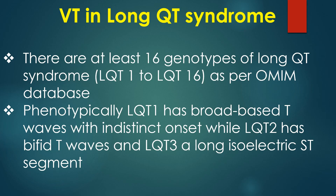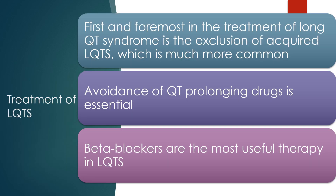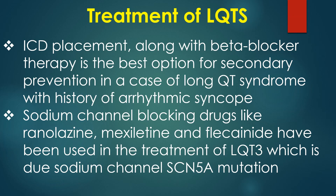There are at least 16 genotypes of long QT syndrome, LQT1 to LQT16, as per the OMIM database. Phenotypically, LQT1 has broad-based T waves with indistinct onset, while LQT2 has bifid T waves and LQT3 has a long isoelectric ST segment. First and foremost in treatment is the exclusion of acquired LQTS, which is much more common; avoidance of QT-prolonging drugs is essential. Beta blockers are the most useful therapy. ICD placement along with beta blocker therapy is the best option for secondary prevention in cases with history of arrhythmic syncope. Sodium channel blocking drugs like ranolazine, mexiletine, and flecainide have been used in the treatment of LQT3, which is due to SCN5A mutation.